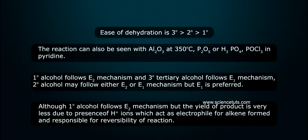Although primary alcohol follows E2 mechanism, the yield of product is very less due to presence of H+ ions, which act as electrophile for alkene formed and are responsible for reversibility of reaction.